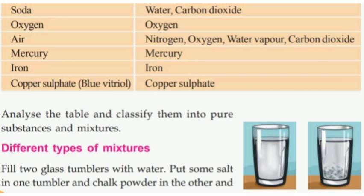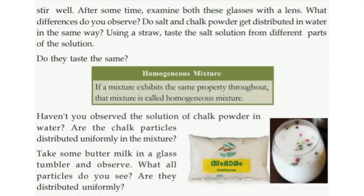Fill two glass tumblers with water. Put some salt in one tumbler and chalk powder in the other. Stir well. After some time, examine both these glasses with a lens. Do salt and chalk powder get distributed in water in the same way?